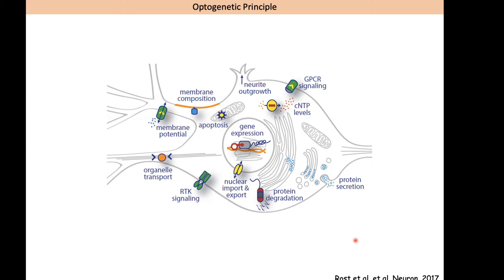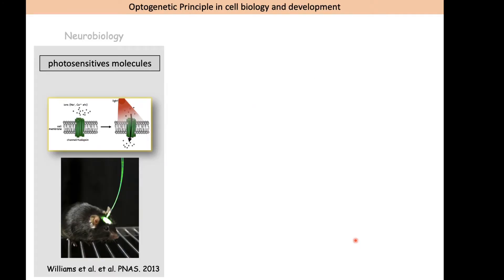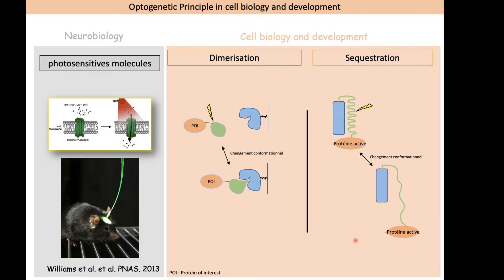At the beginning, optogenetics was developed in neurobiology, where neurobiologists have used photosensitive molecules for a long time — in particular channelrhodopsins, which are sensitive to light — to manipulate the behavior of mice. There is now a whole body of papers showing that by applying light directly to the brain of genetically modified mice expressing optogenetic modules, we are able to manipulate their behavior.